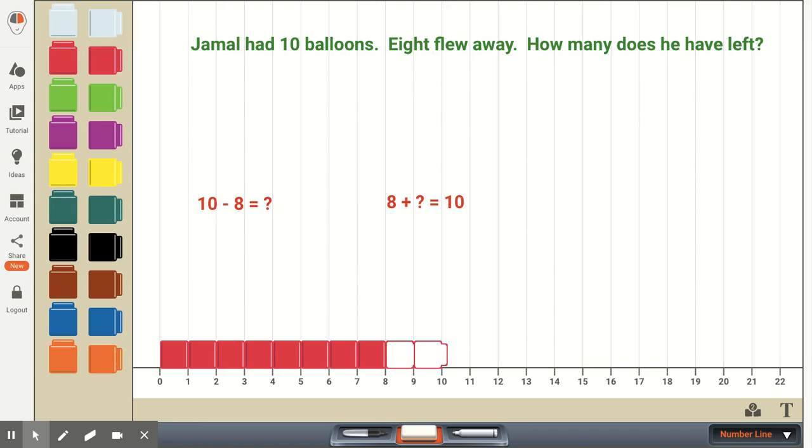So looking at it in terms of our part, part, whole, the whole is 10, one of the parts is 8, and we're looking for the other part. So if we want the first grader to write this as an addition problem, it will be an addition problem with one of the addends being unknown.